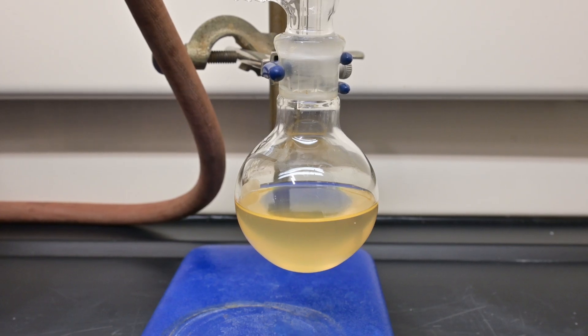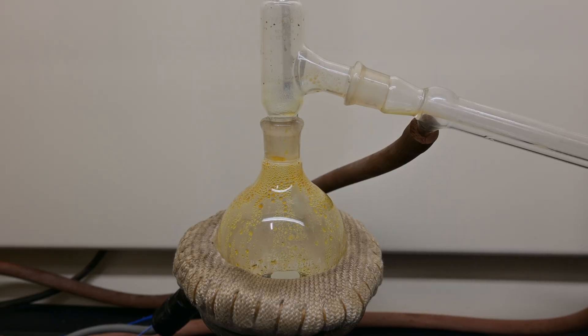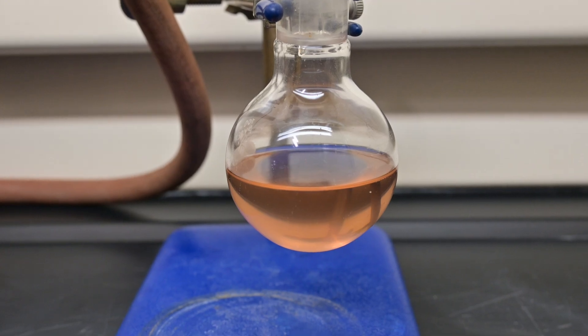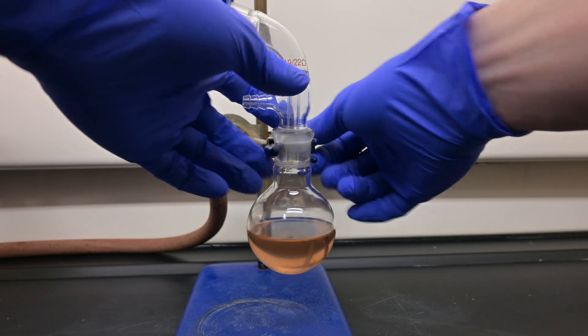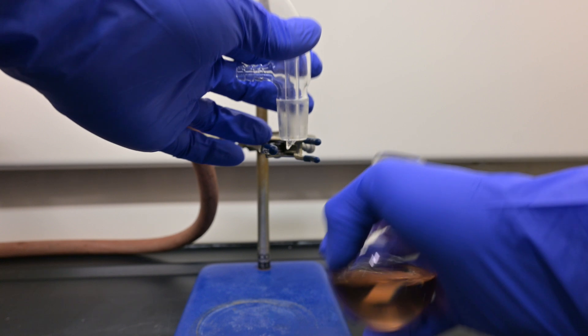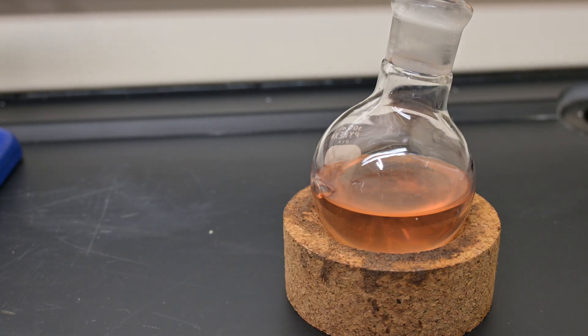I could have forced the temperatures up to get more product over, but the chemicals coming over at these high temperatures are most likely large fragment compounds from the reaction, not the styrene we want. I let the distillation setup cool before the next step. During that time, the crude product turned from a yellow color to a pink color. At this point, I took a small sample to compare it later.